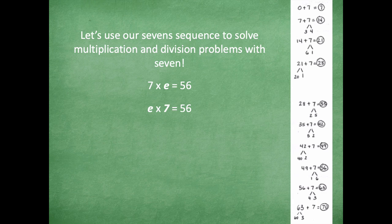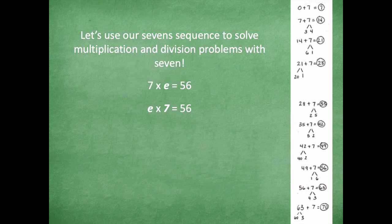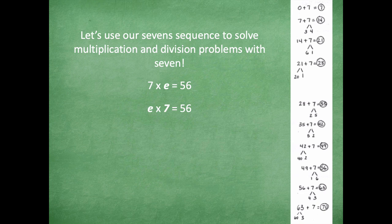Cause for me, it's easier to be able to count how many groups of seven there are, because I know we're counting by sevens in our number sequence. Okay, so now it's your turn, you guys are it. Go ahead and solve for E equals seven times 56. So I want you to tell me what does E equal in our problem?